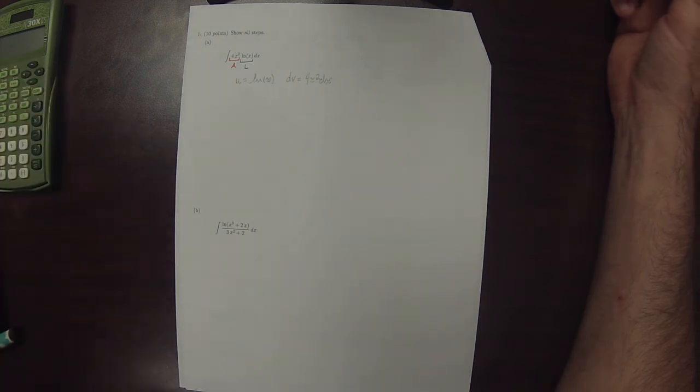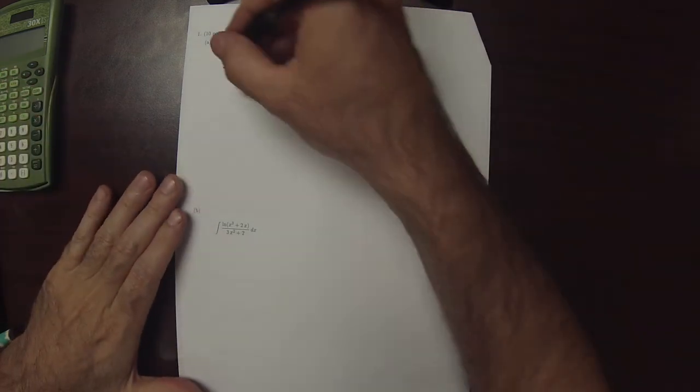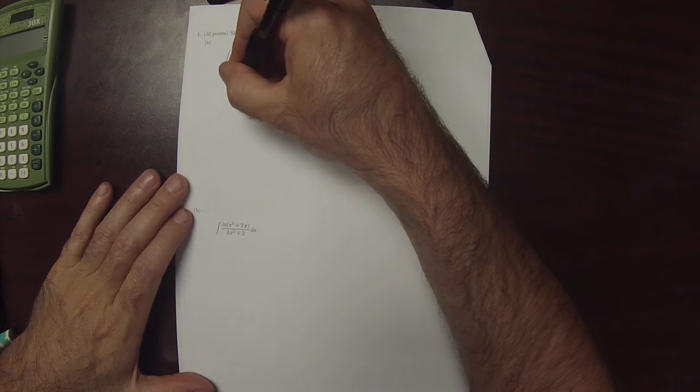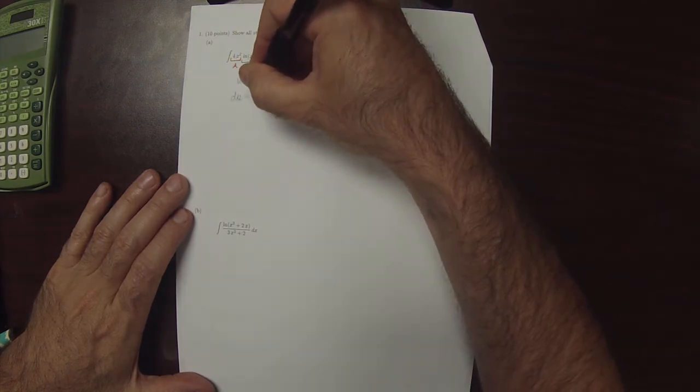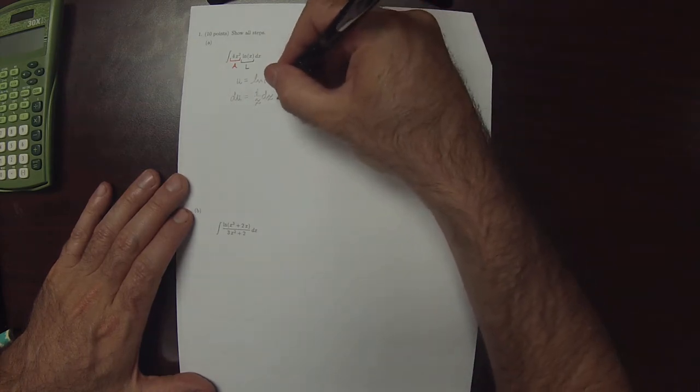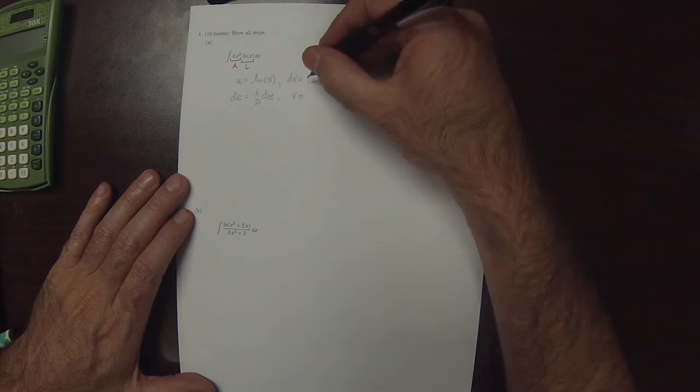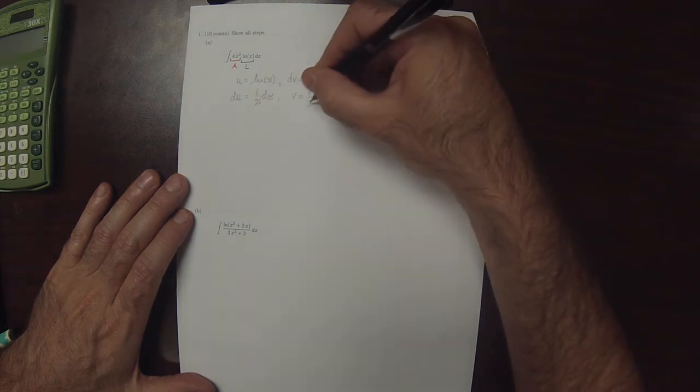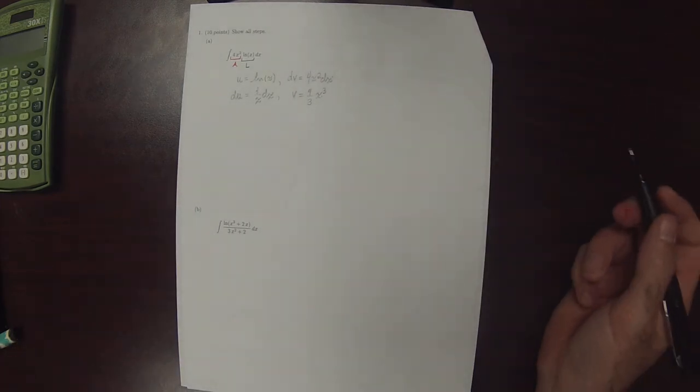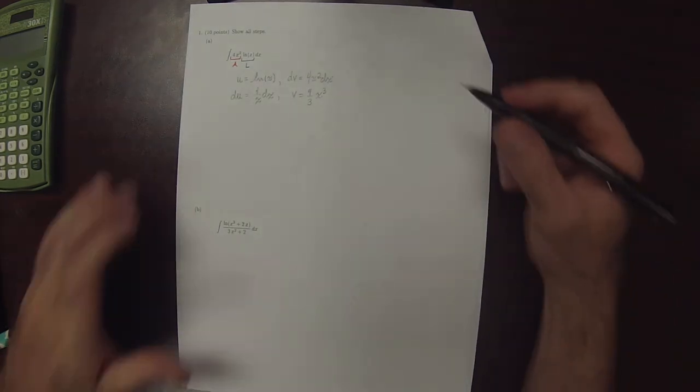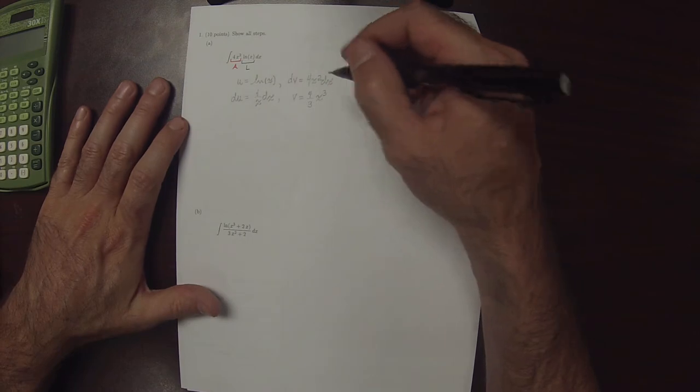There are four symbols in the by-parts formula. From u we can get du, which is 1 over x dx. And from dv we can get v, which will be 4 thirds x cubed. And remember, in by-parts we omit the arbitrary constant at this position.